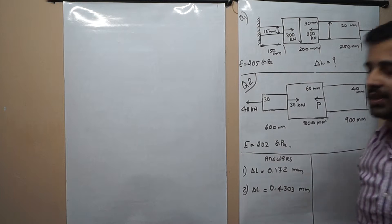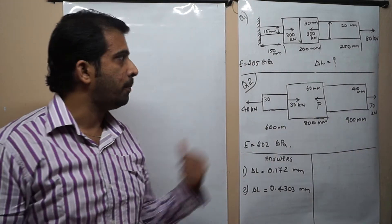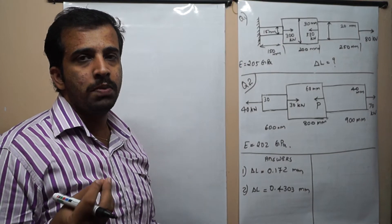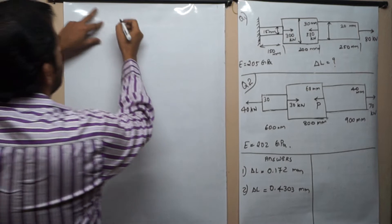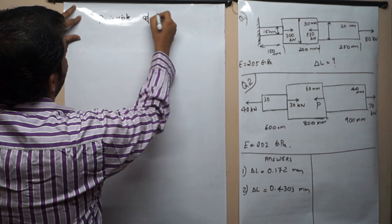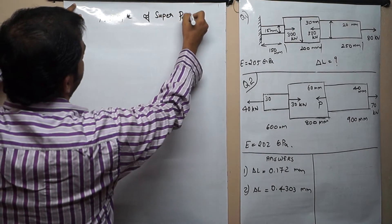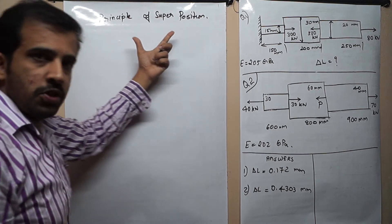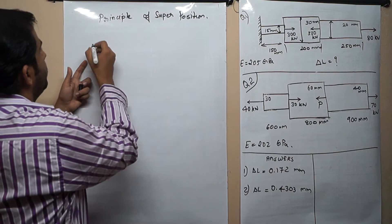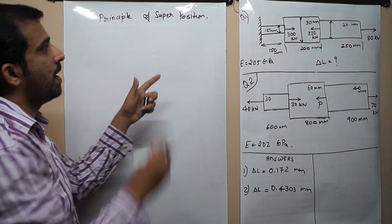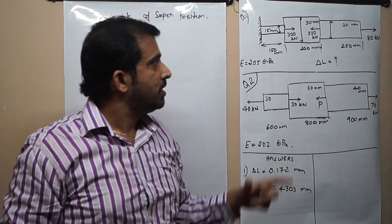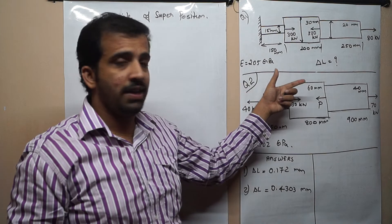We can solve this problem using the principle of superposition. The superposition principle states that the net effect produced by all the forces acting on a body will be equal to the sum of the effects produced by each and every force individually on independent segments of the body.